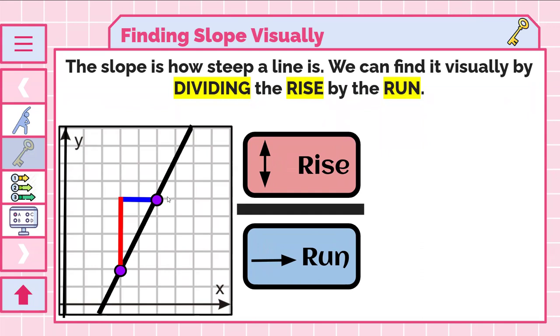One thing to take note of is just like on our warm-up, what we're doing is we're making a step. We're making like a triangle. So we're making a triangle to compare steepness.